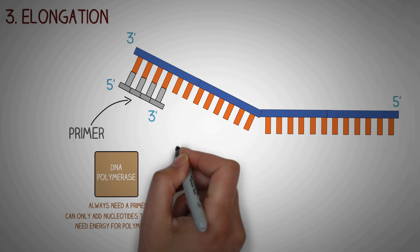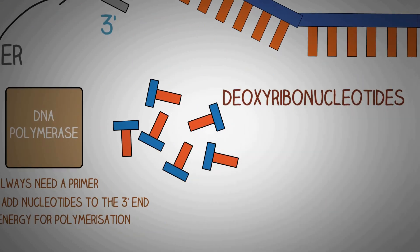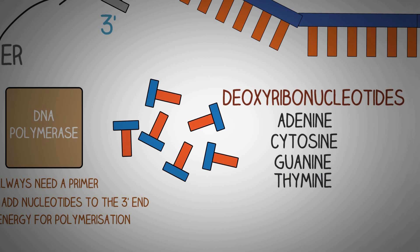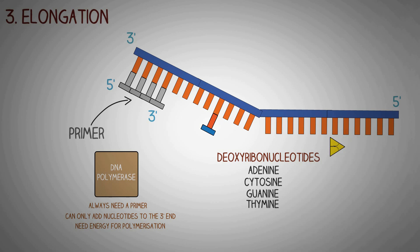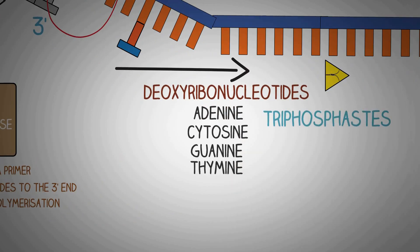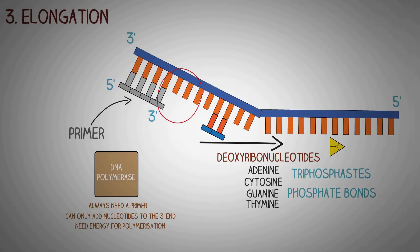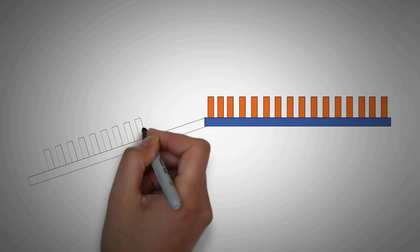Once the primer is synthesized, the DNA polymerase performs the vital function of elongation of the DNA strand by adding new nucleotides to the three prime end of the growing chain. The DNA polymerase uses deoxyribonucleotides containing either of the four bases: adenine, cytosine, guanine, or thymine, adding them one by one. Since the helicase is opening the DNA helix in the same direction, the DNA polymerase can synthesize a long chain of new DNA continuously — this is known as continuous synthesis on the leading strand. The energy for this polymerization reaction comes from breaking the high-energy phosphate bonds present between the triphosphates of the deoxyribonucleotides.